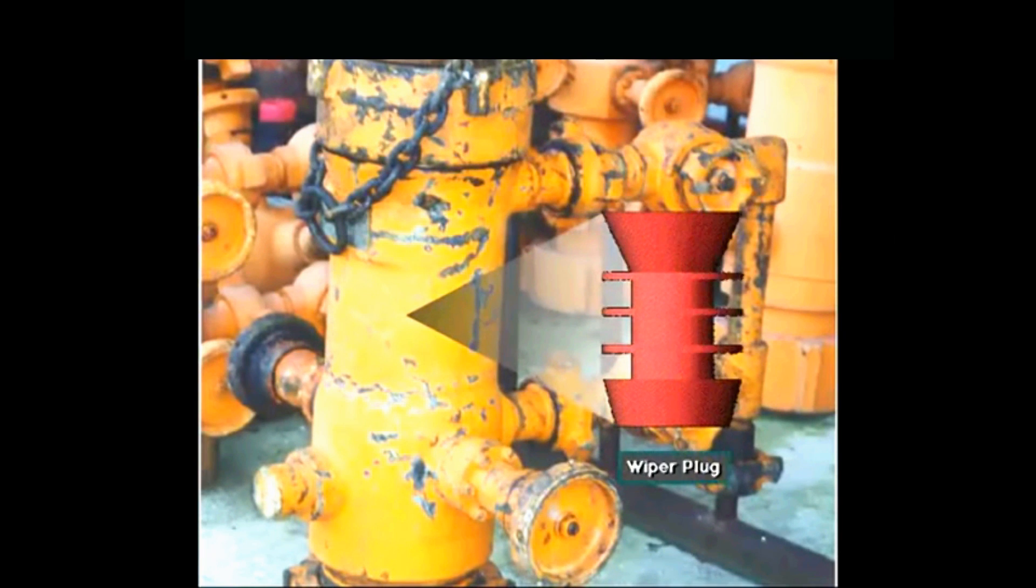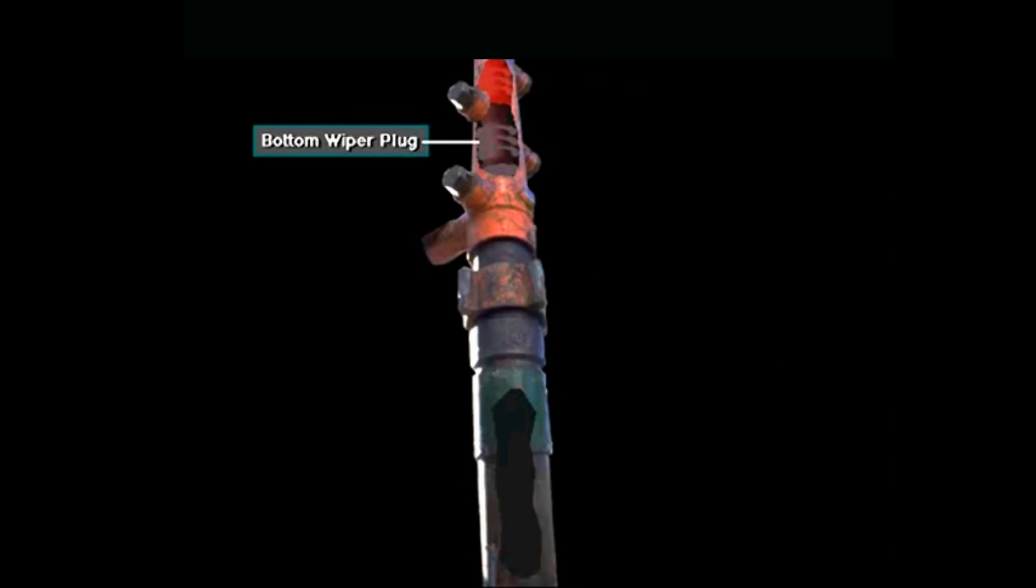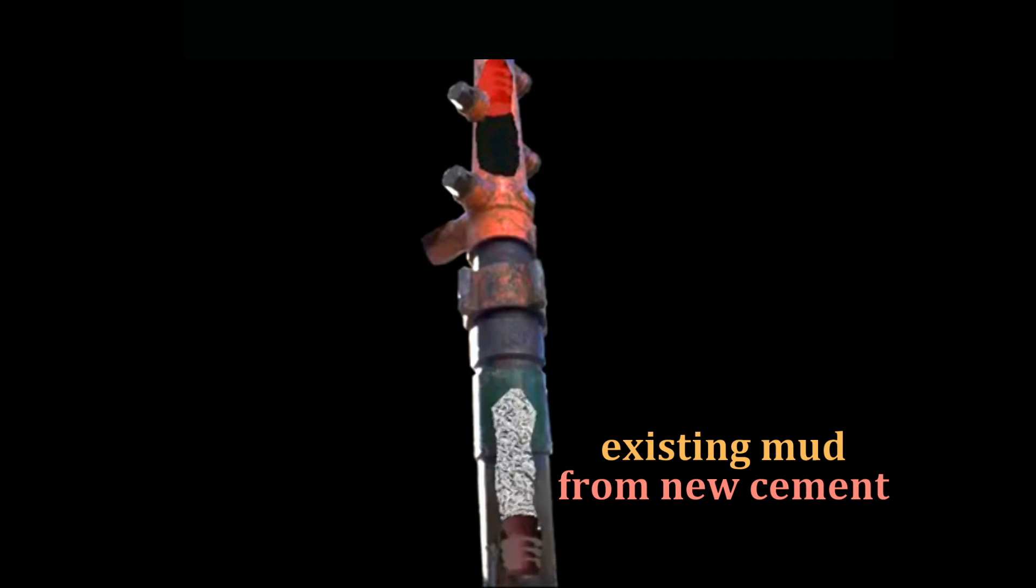First, a hard rubber rupture plug is inserted into the casing followed by the cement slurry. This plug will separate the existing mud from the new cement.